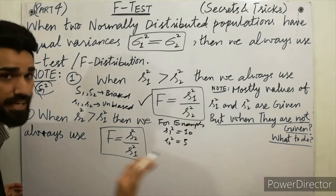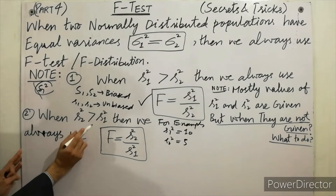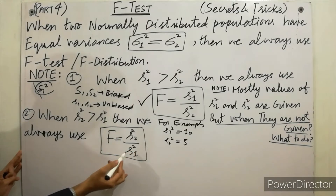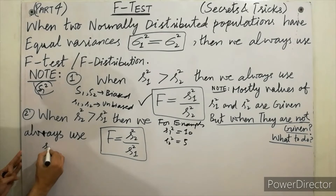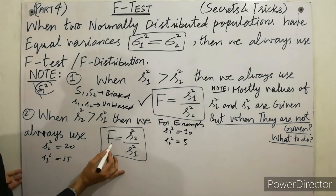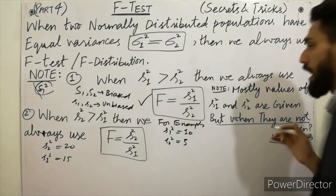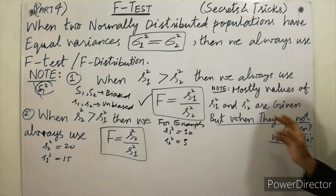The second rule — when S2 squared is greater than S1 squared, we always use F = S2 squared divided by S1 squared. This is a very important point which nobody tells you about. For example, if S2 squared is 20 and S1 squared is 15, since S2 squared is greater, we use F = S2 squared / S1 squared.